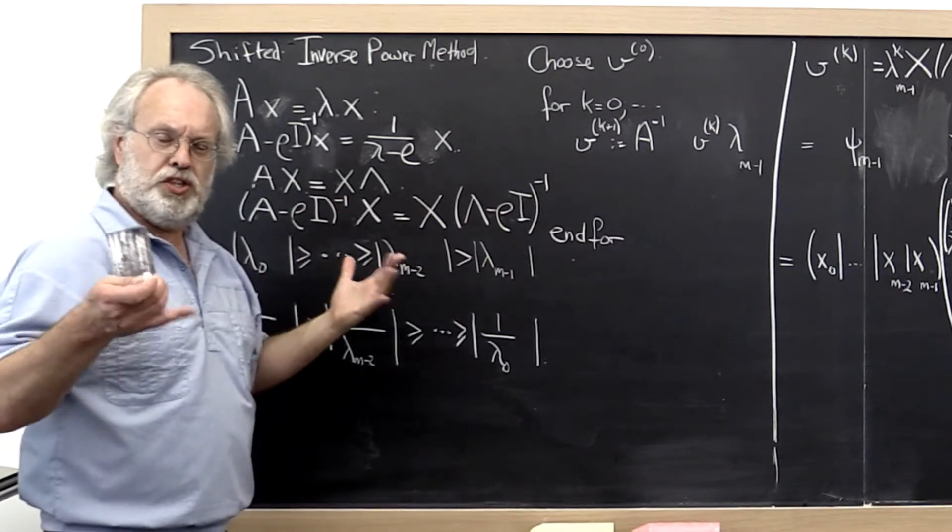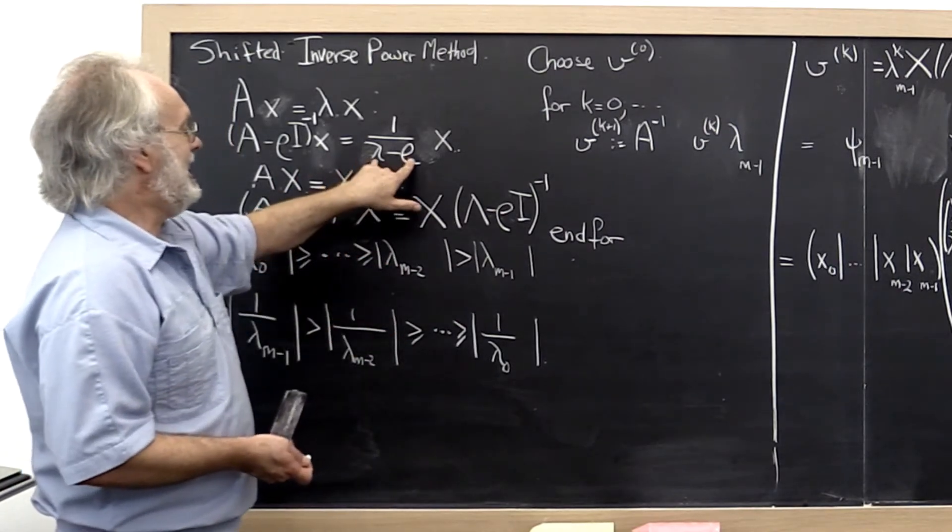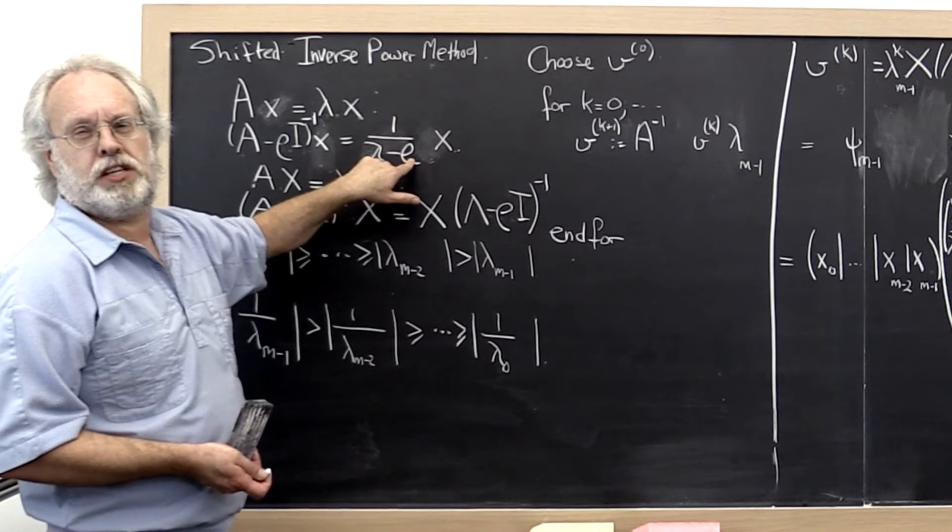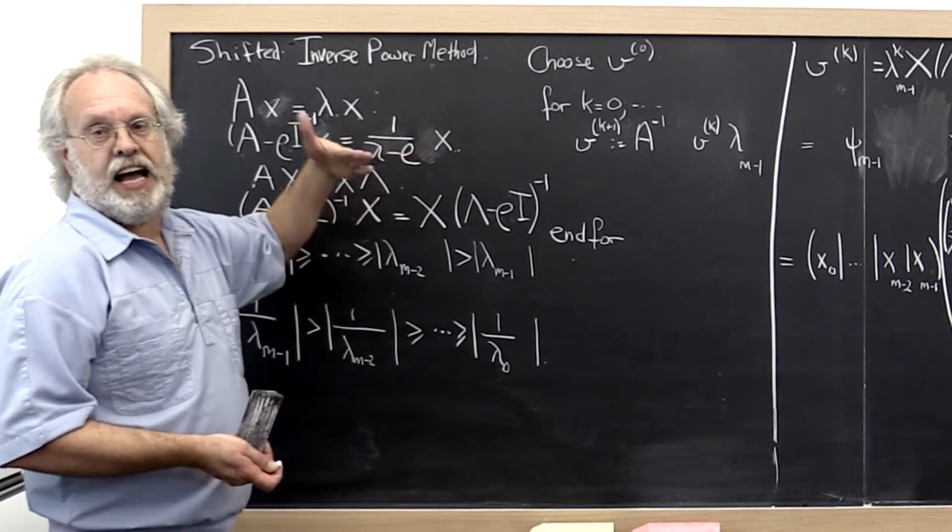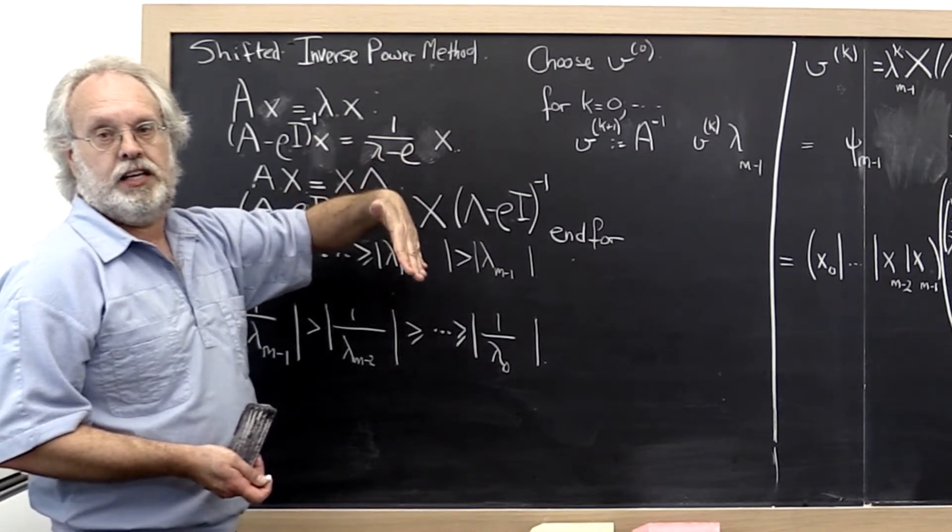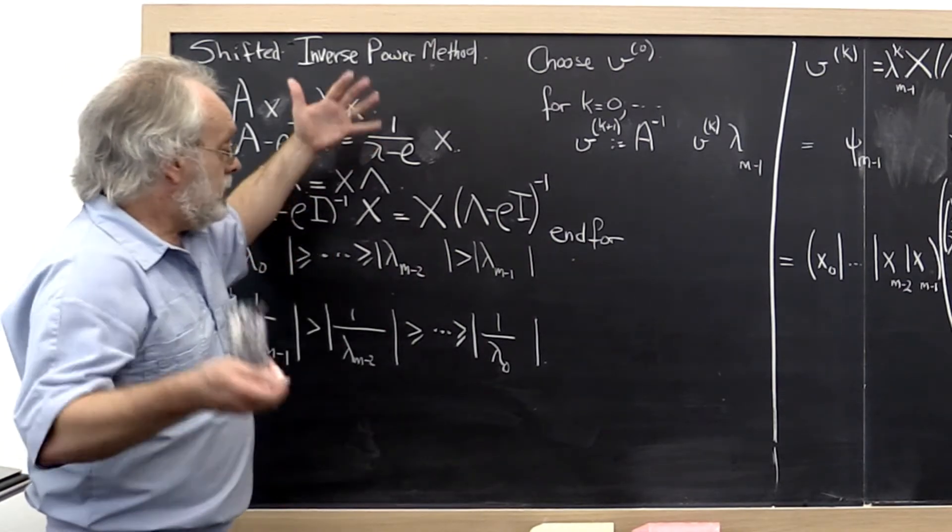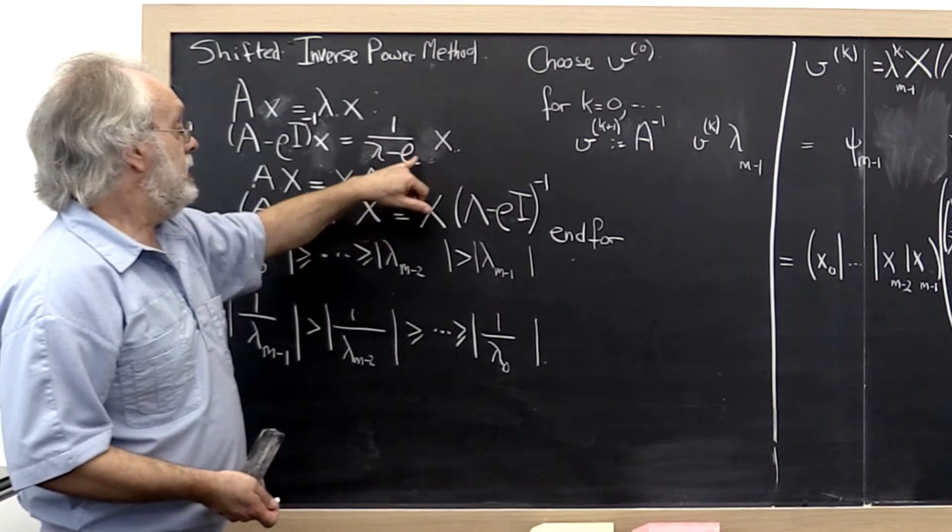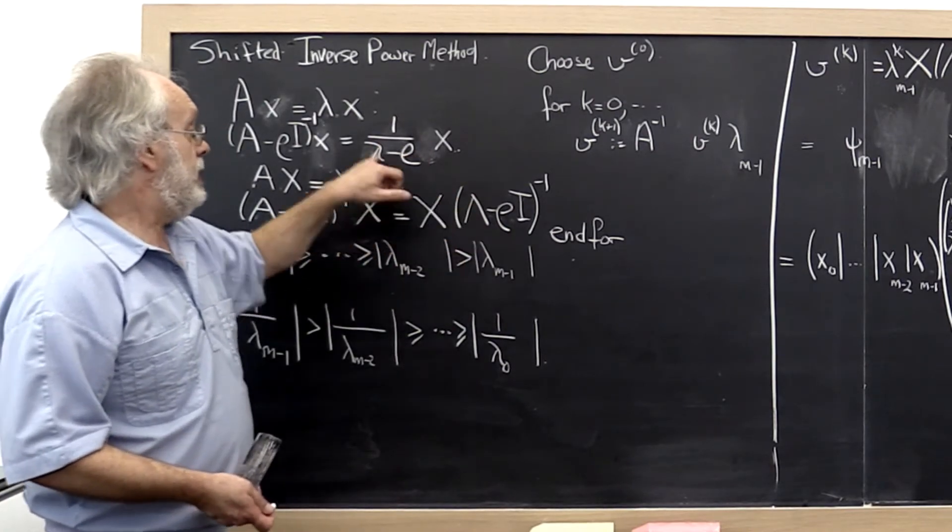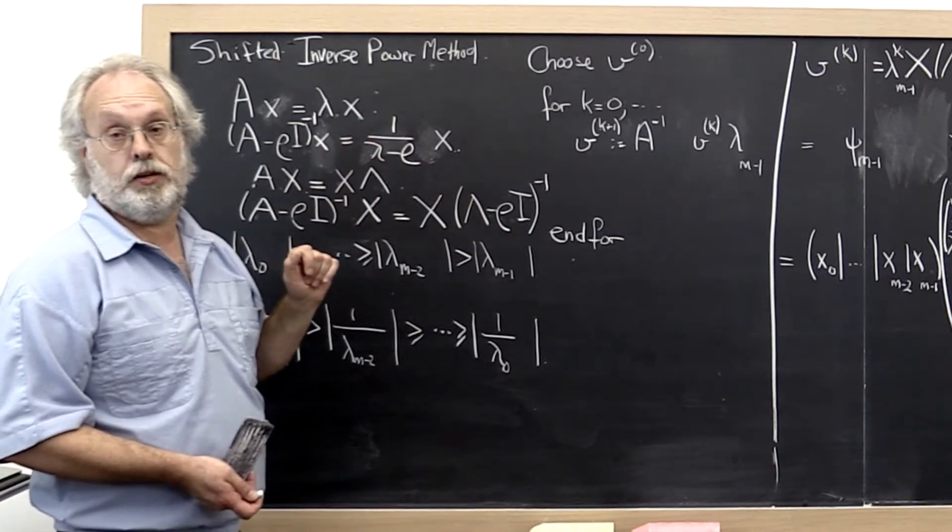So why is this called a shift? This is like shifting the spectrum of matrix A. Every eigenvalue of A is shifted by subtracting out rho. And of course, as a result, if we invert the matrix, then we have to take the reciprocal of that.